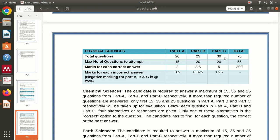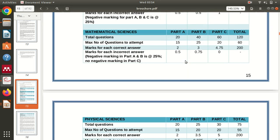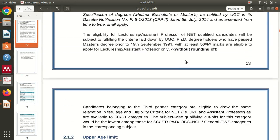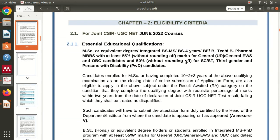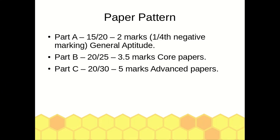The total marks distribution is: 100 marks from Part C, 30 marks from Part A, and 70 marks from Part B. So Part C, the advanced part, carries maximum marks in your paper. Also, if you solve more than the allowed number — for example, 16 questions in Part A instead of 15 — they will check only the first 15 questions and give you marks accordingly.